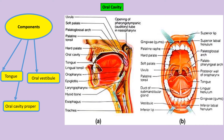We can see the anatomy of the oral cavity in a detailed picture. The components of the oral cavity are the oral vestibule and the oral cavity proper. The posterior termination of the oral cavity proper is called the palatoglossal arch — that's an important question that can be asked in the exam.